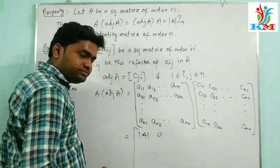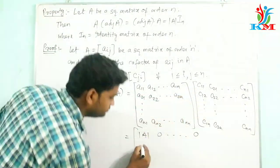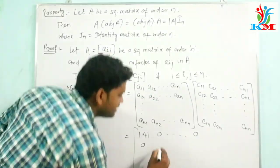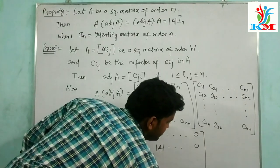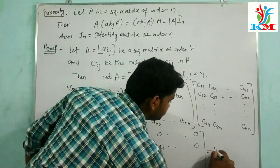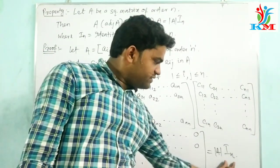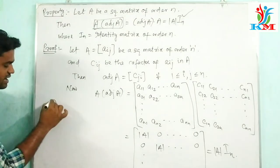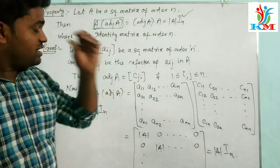So we get an N×N matrix whose diagonal elements are all equal to the determinant of A and all off-diagonal elements are 0. Taking the determinant of A as common factor, we get the identity matrix of order N. Thus we have shown that A times adj(A) equals det(A) times I_N. Similarly, we can show that adj(A) times A also equals det(A) times I_N using the same procedure.